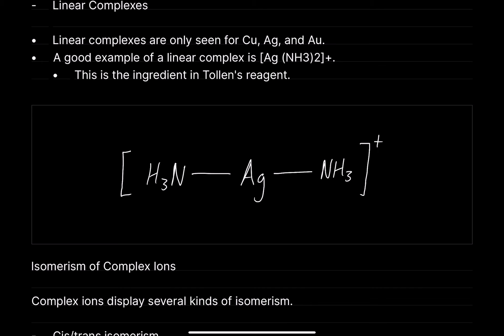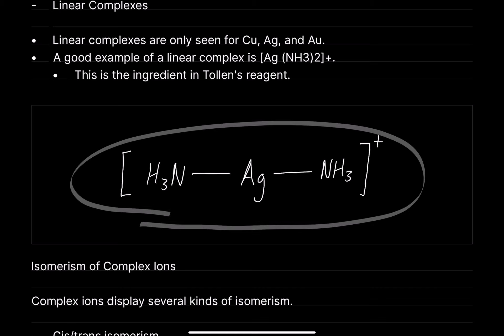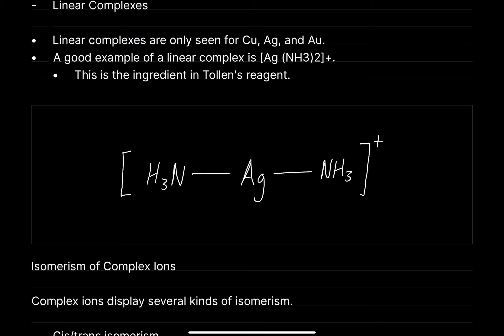When you're talking about the test for an aldehyde, you can either use Benedict's reagent or Tollens reagent. You need to know what Tollens reagent is and what the test is. Silver diamine is the key ingredient in Tollens reagent. What it actually does is act as an oxidising agent — so when it's reacting with an aldehyde, it oxidises the aldehyde into a carboxylic acid.